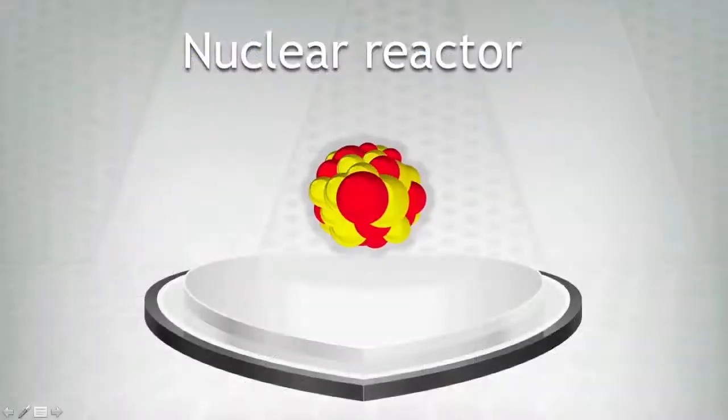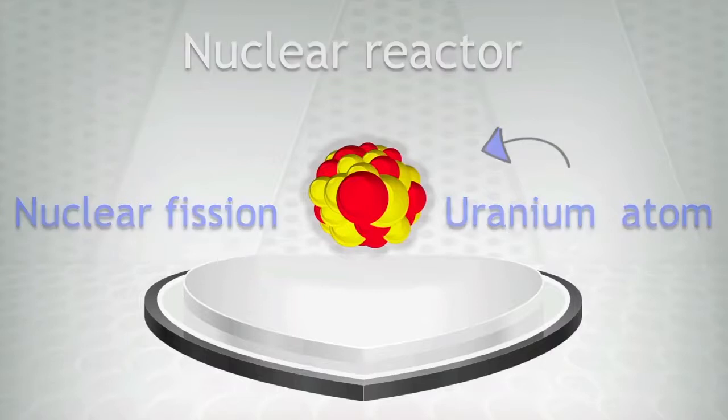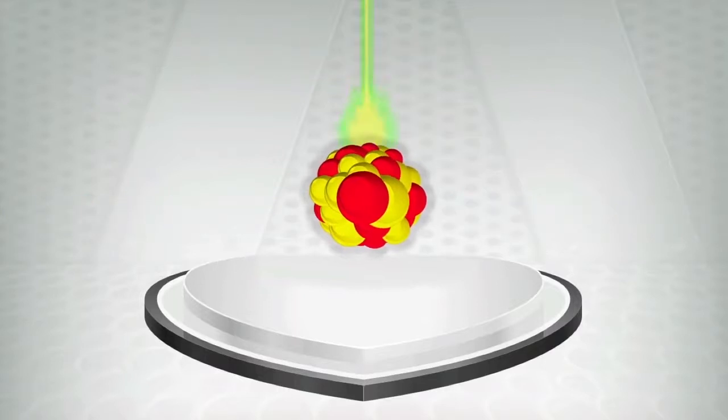A nuclear reactor works by splitting up large atoms such as uranium. This is known as nuclear fission. These large atoms are very unstable and can be split up by firing a neutron at them.